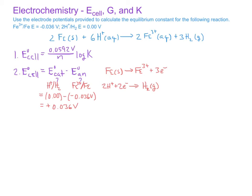The next step is to identify the moles of electrons transferred in the balanced chemical equation. For one iron atom going from 0 to 3 plus, the iron loses three electrons. With a coefficient of 2 in the balanced equation, we multiply those three electrons by 2, meaning there are six moles of electrons transferred. Checking this with the other half reaction: six hydrogen ions going to three moles of H₂ gas also involves six electrons. So for this balanced redox reaction, n equals 6.